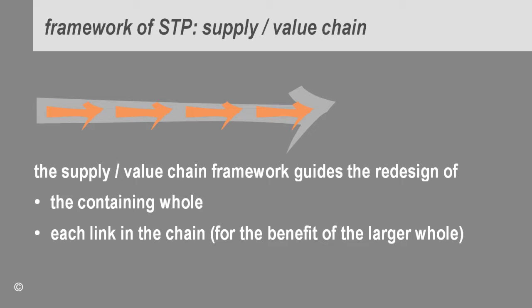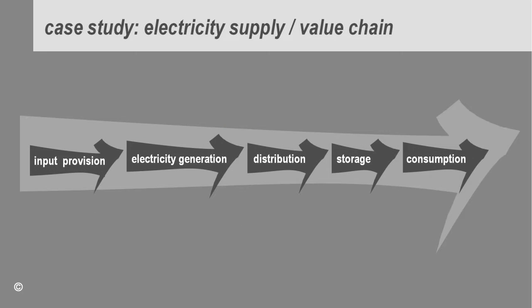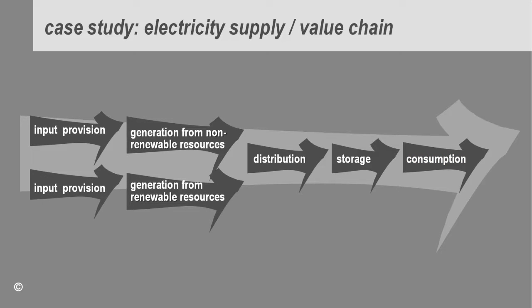Let us look at a case study: the value chain of the electricity industry. The framework of the program allows us to look at issues at different levels. For example, we can look at issues at the overarching level, like how much electricity is generated and consumed. We can also look at the next broad level — for example, how much electricity is generated from renewable versus non-renewable resources, and what some of the issues around that are.